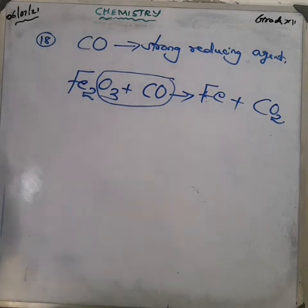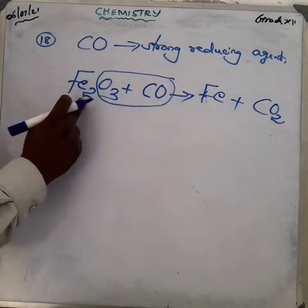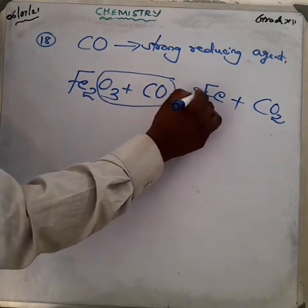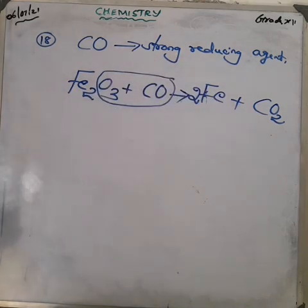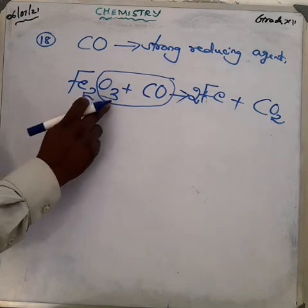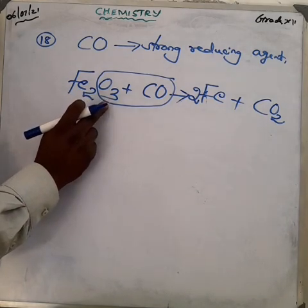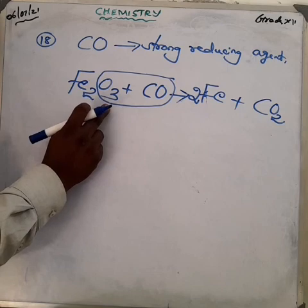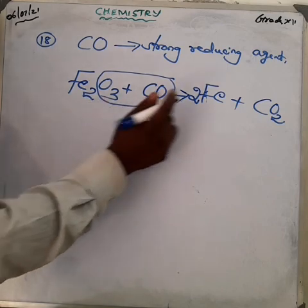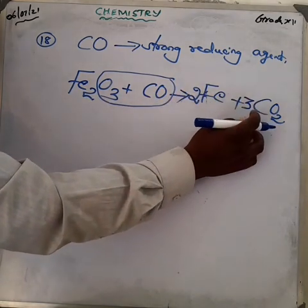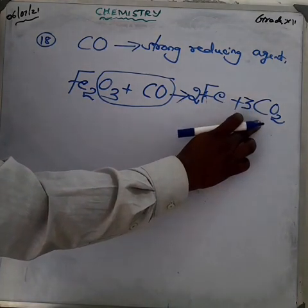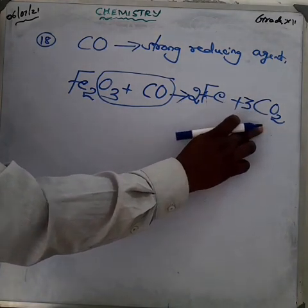How to balance the equation? On the reactant side, iron oxide Fe₂O₃ has 2 iron atoms, so make 2 Fe on the product side. Fe₂O₃ has 3 oxygen atoms, so make 3 CO₂ in the product side, which means 3 CO on the reactant side. The balanced equation is: Fe₂O₃ + 3CO → 2Fe + 3CO₂.